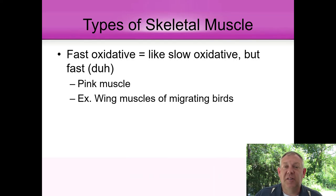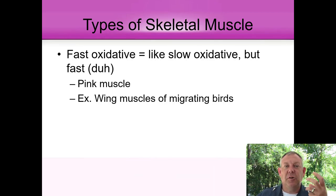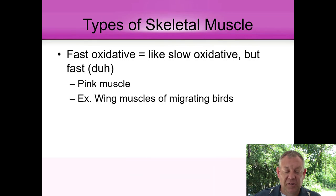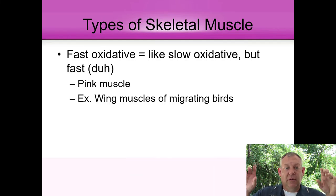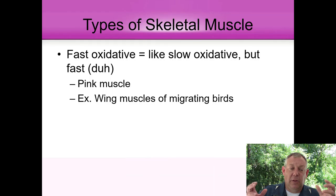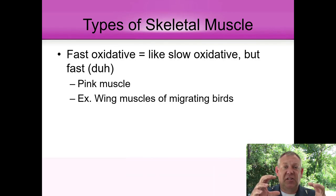Then you've got fast oxidative muscle — like slow oxidative but faster. It has a lot of blood, myoglobin, and mitochondria, but the muscles can move faster, so you can have a faster muscle twitch and sustain it. The wing muscles of migrating birds are an example — you see pink muscle, halfway between white and red. A tuna compared to a catfish looks and tastes very different because of different muscle types. All these muscle types still do contractions the same way; it's the other stuff inside the cell that gives them different properties and flavors.